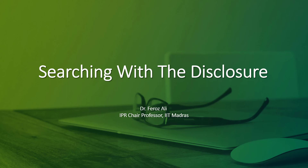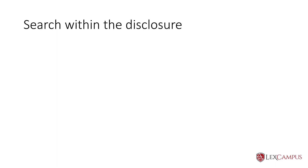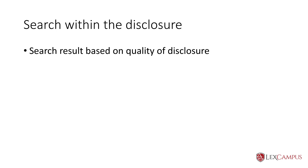Searching with the disclosure. Once you have a working disclosure, you do a search to understand whether the invention can be patented. The search result, as we have already mentioned, will be dependent on the quality of the disclosure. How hard you try, or how rigorous the disclosure process will be, will actually determine the quality of your search report.